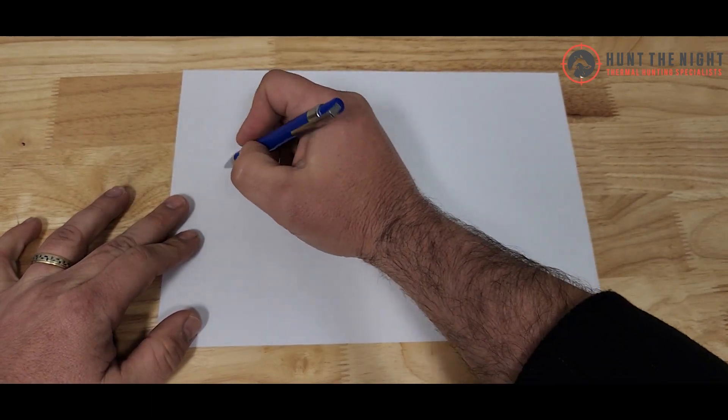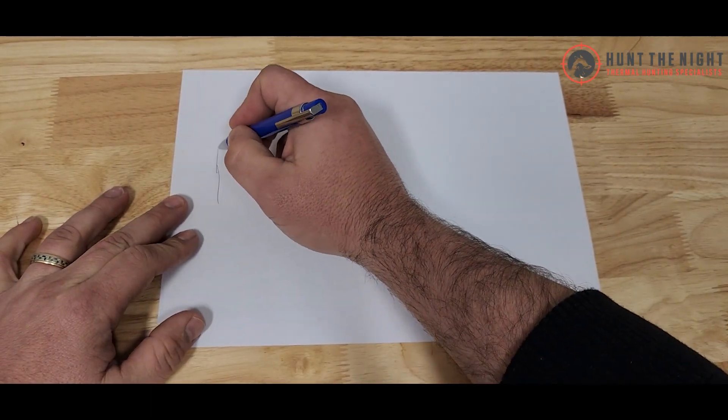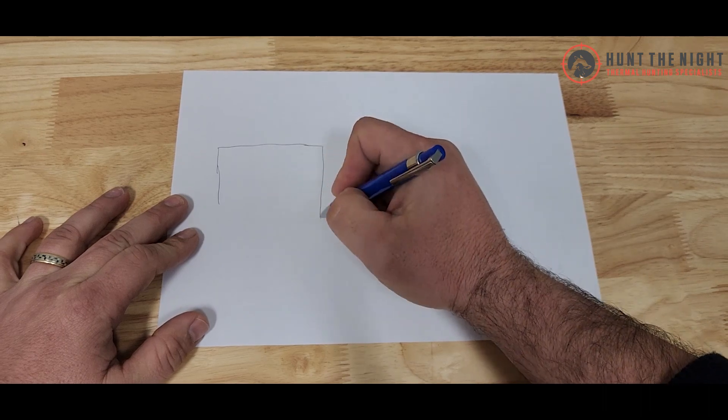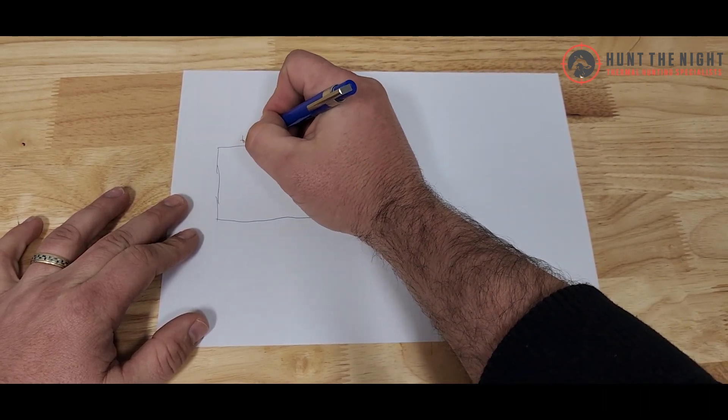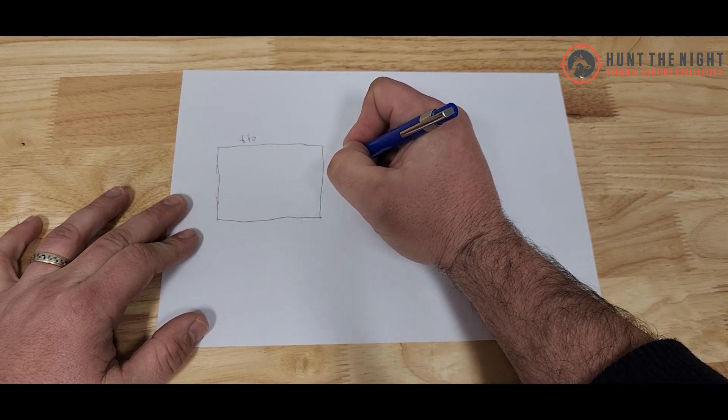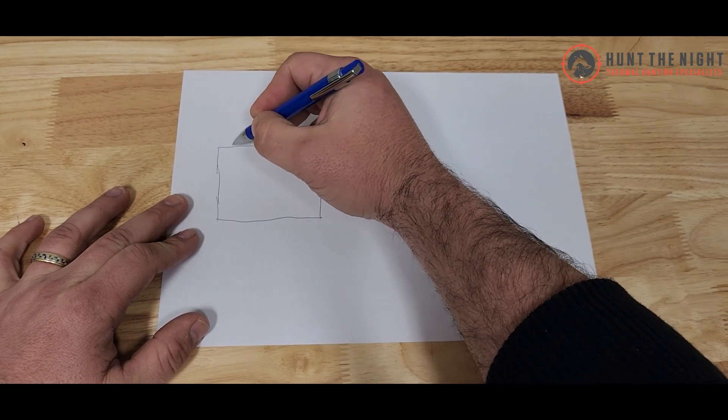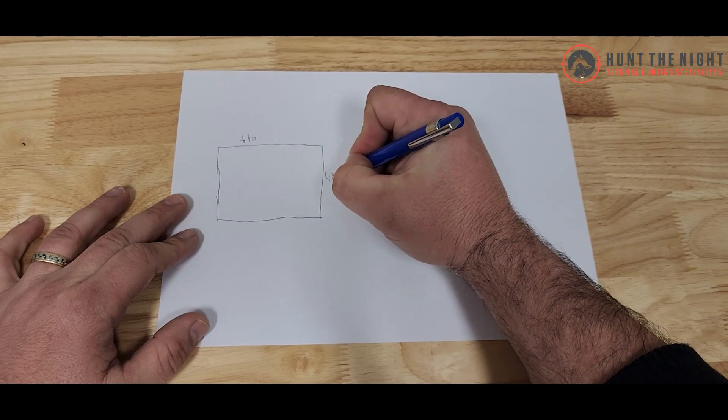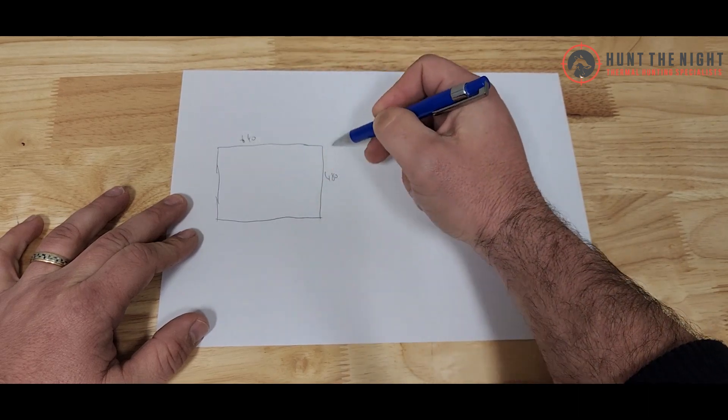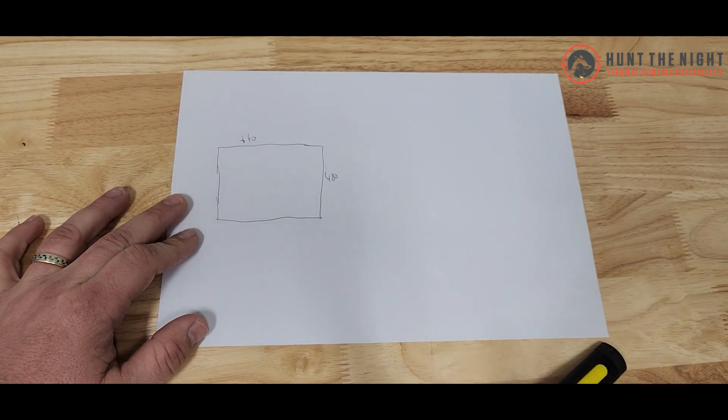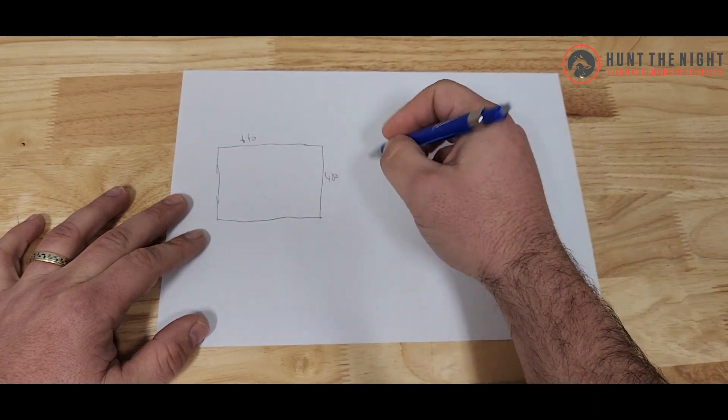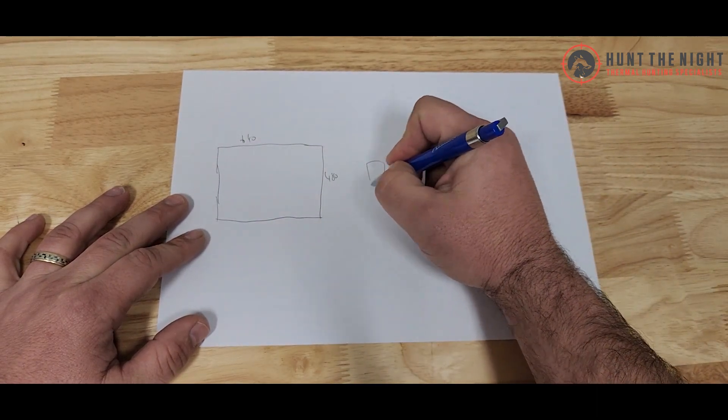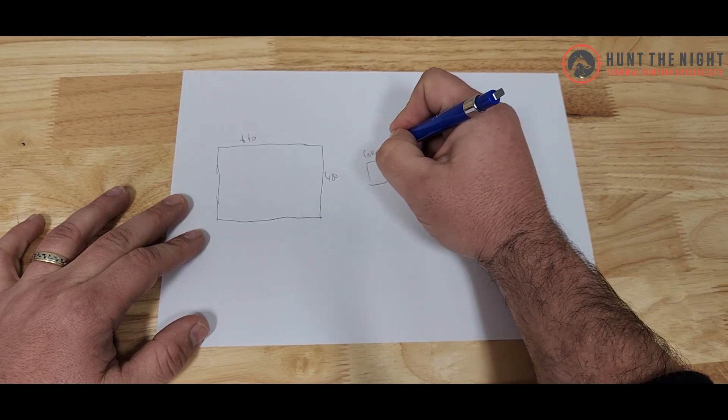So when we start with this, we'll start with our sensor. Okay, and say this is our 640 sensor. And as we've talked about in previous videos, this is 640 in the Pulsar and this is 480. So it's 640 columns and 480 rows. Okay, and all that information is interpreted by a core. And we'll just put the core here because it's important to understand that it goes into a core in a computer.